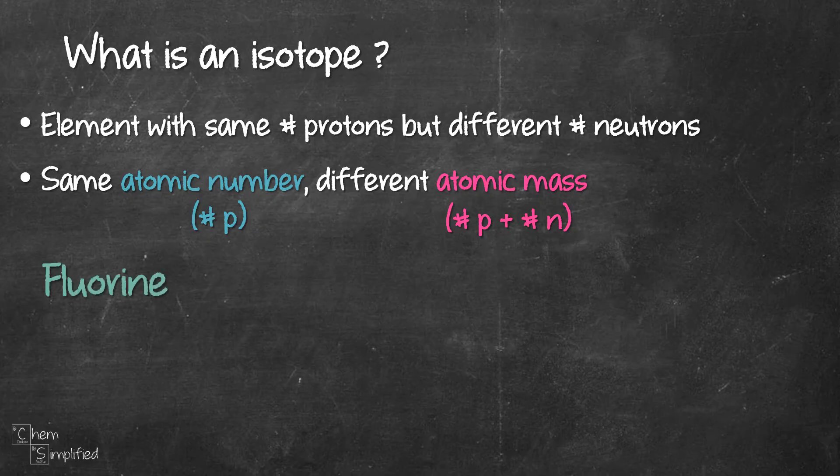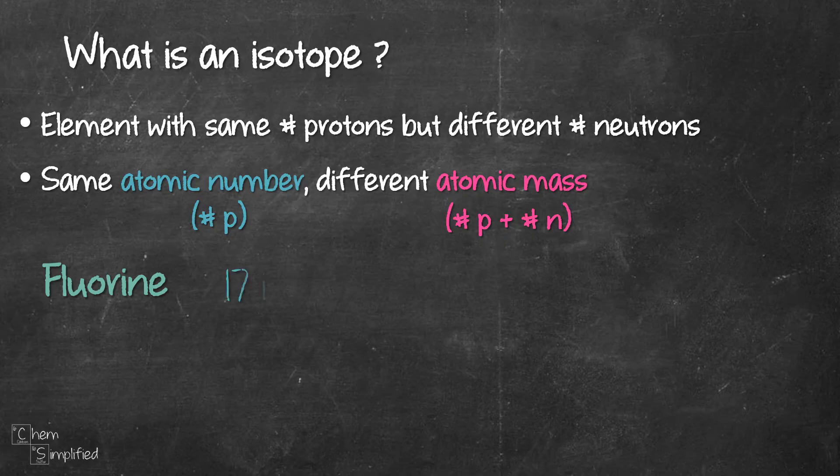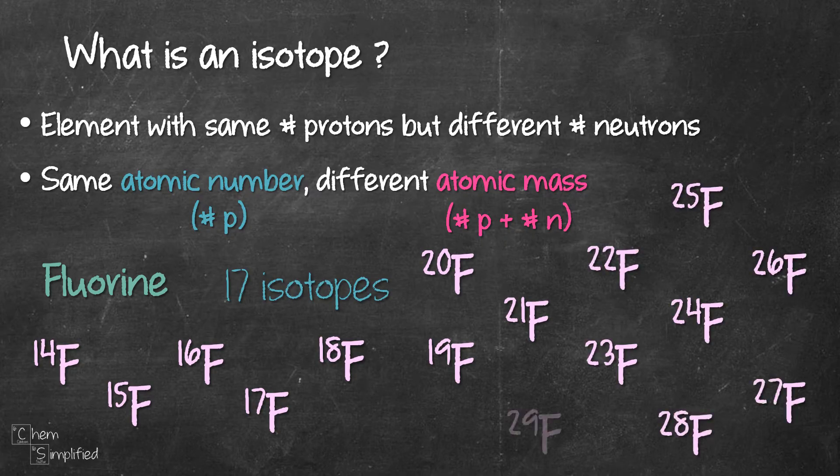So let's take fluorine for example. It has a total of 17 isotopes. They range from fluorine-14 all the way to fluorine-31. From these 17 isotopes, the most stable and abundantly found isotope is fluorine-19.